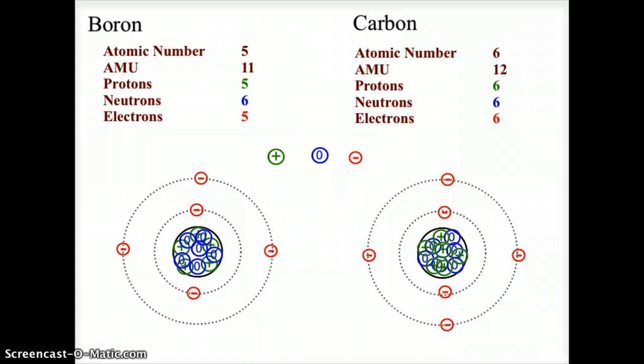Welcome back. Here we have both models completed. For boron, the atomic number is 5, so five protons in the nucleus. The atomic mass is 11, so 11 minus 5 gives six neutrons. We have five electrons: two in the first orbital and three in the second. For carbon, atomic number 6 and mass 12 gives six protons and six neutrons in the nucleus, two electrons in the first orbital, and four in the second orbital.